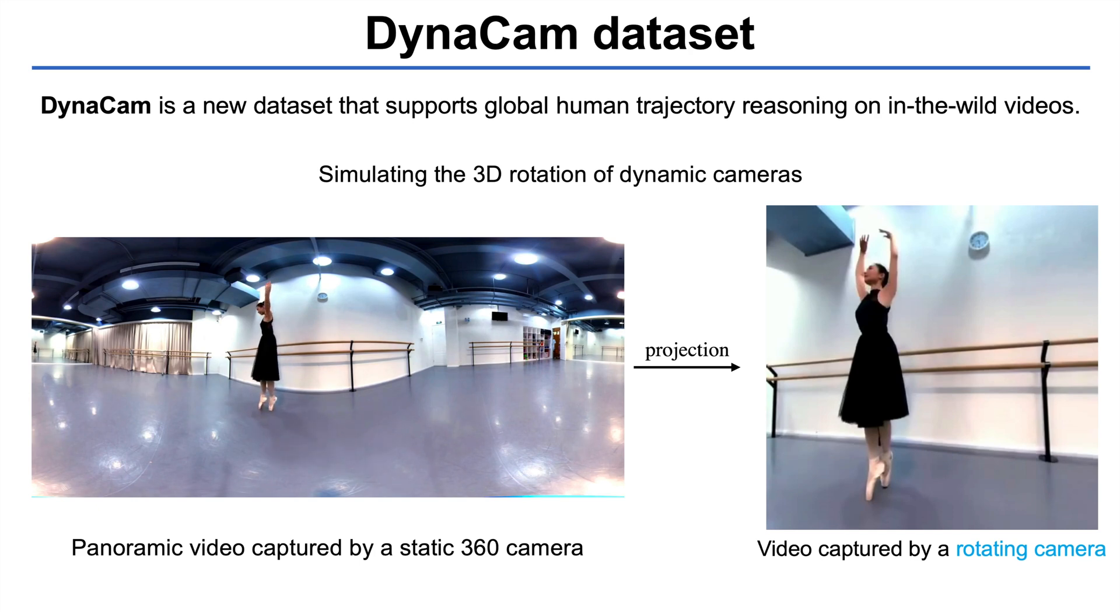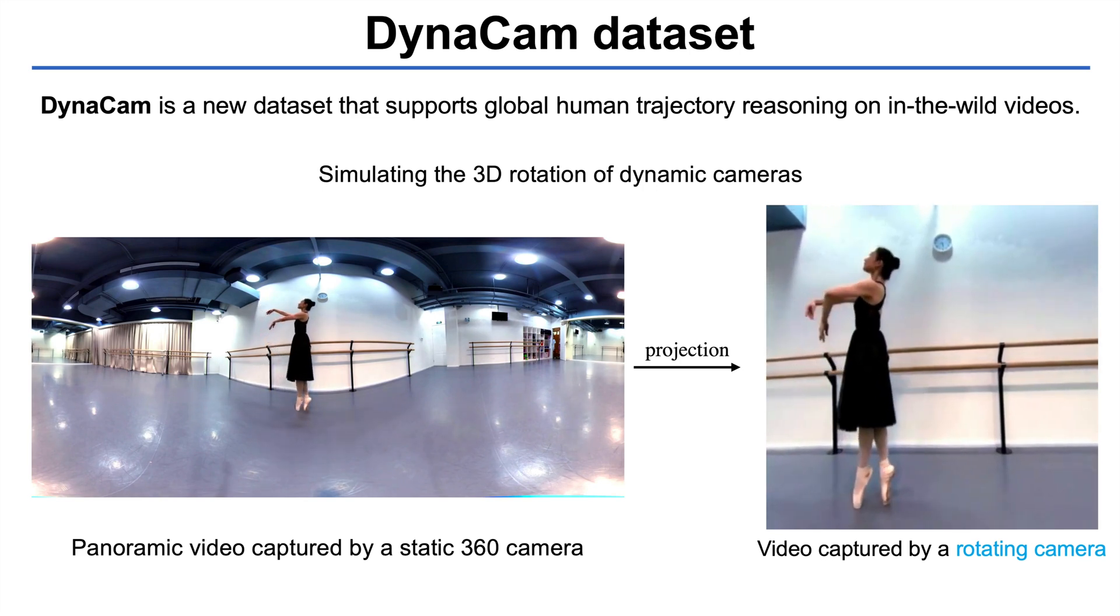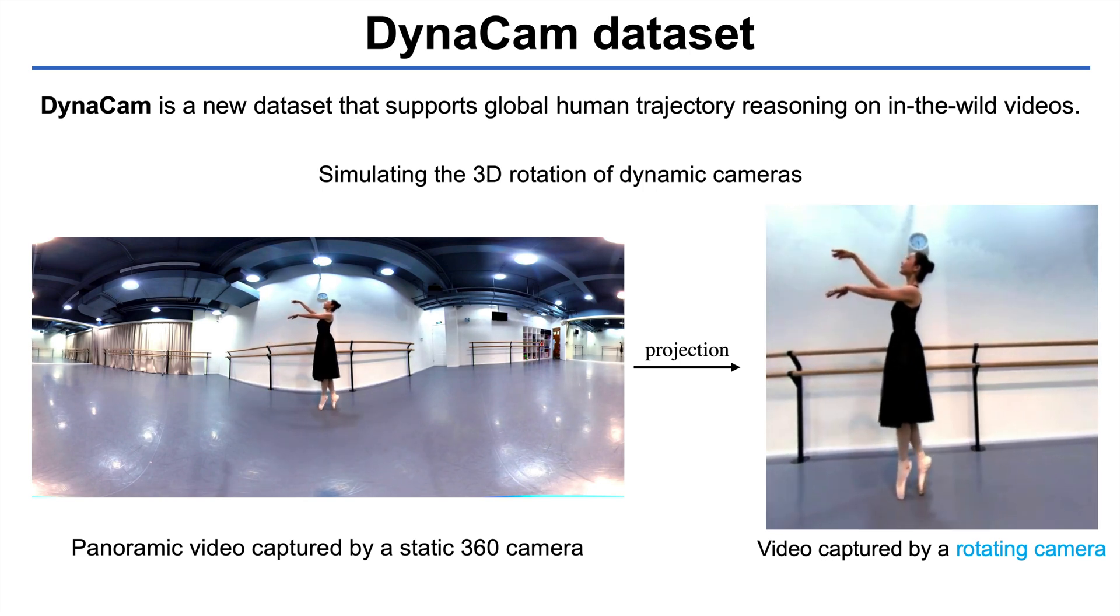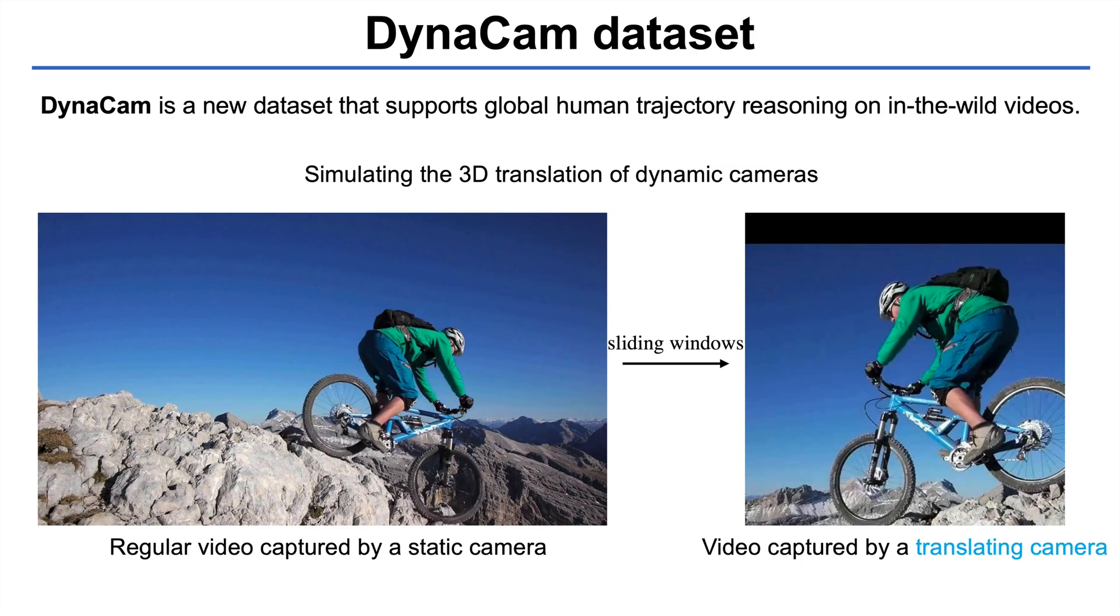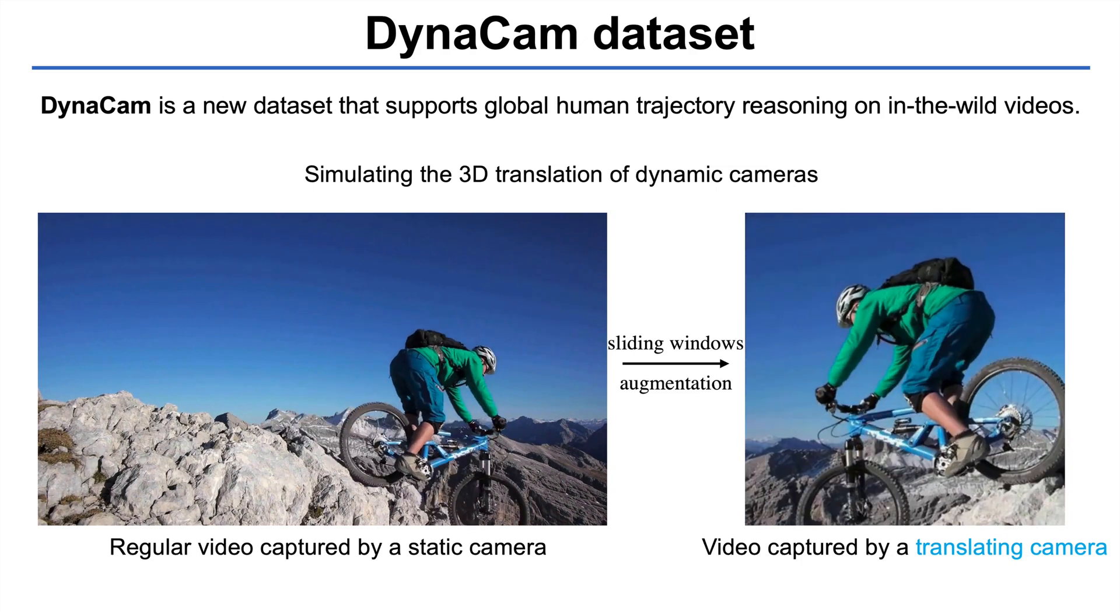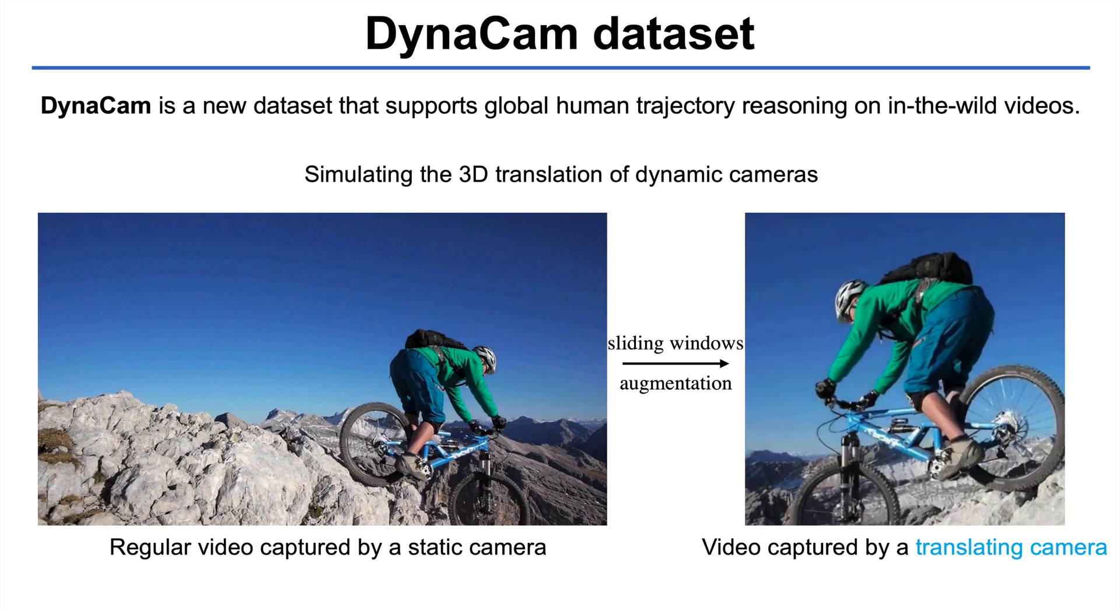We simulate a moving camera using videos captured by static cameras. To simulate a rotating camera, we project panoramic video frames into regular perspective views. To simulate the 3D translation of dynamic cameras, we use a sliding window to crop regular videos captured by a static camera.